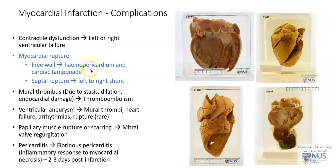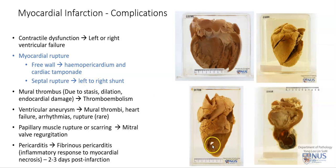There can also be myocardial rupture, and this is the example that we are discussing here. If the rupture occurs in the free wall, this can give rise to hemopericardium and tamponade. However, if it occurs in the interventricular septum, as it does here, this can give rise to left to right shunting, and eventually there can be heart failure.